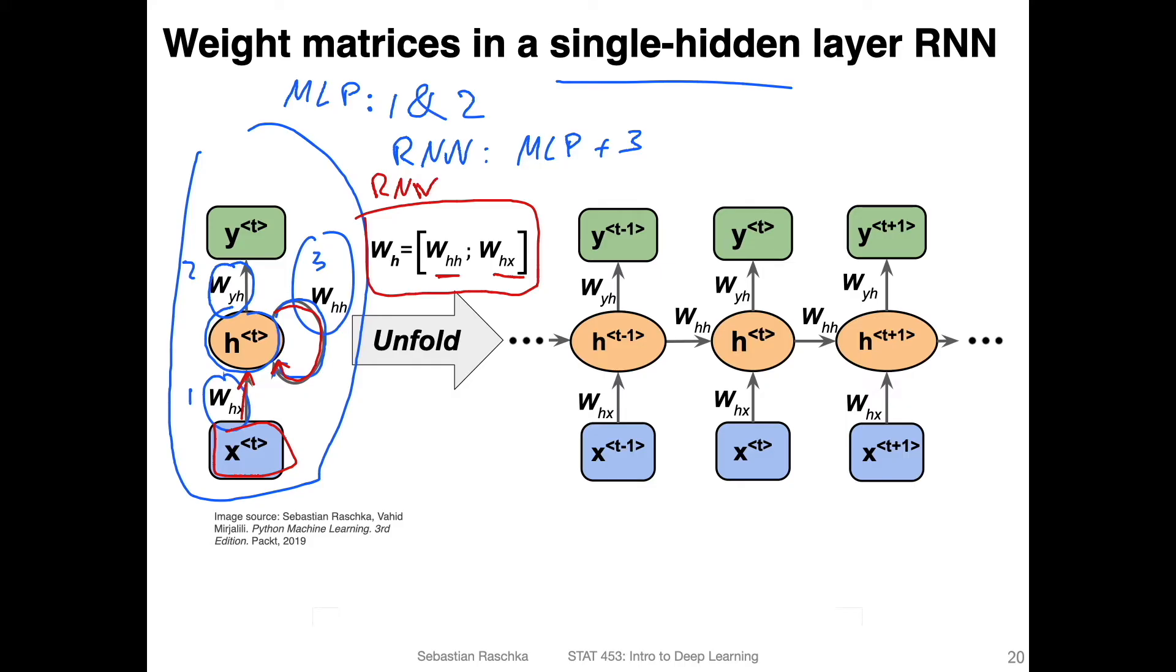So on the right hand side is the unfolded version. And you can see that we are reusing these matrices. So at each time step, we use the same matrix here for the input connected to the hidden state. And then we also use the same matrices here for each time step. So the same matrix connecting the hidden state to the next hidden state. So what's really new compared to a multilayer perceptron is that we have these in green. These are weight matrices that we did not have in the multilayer perceptron before.